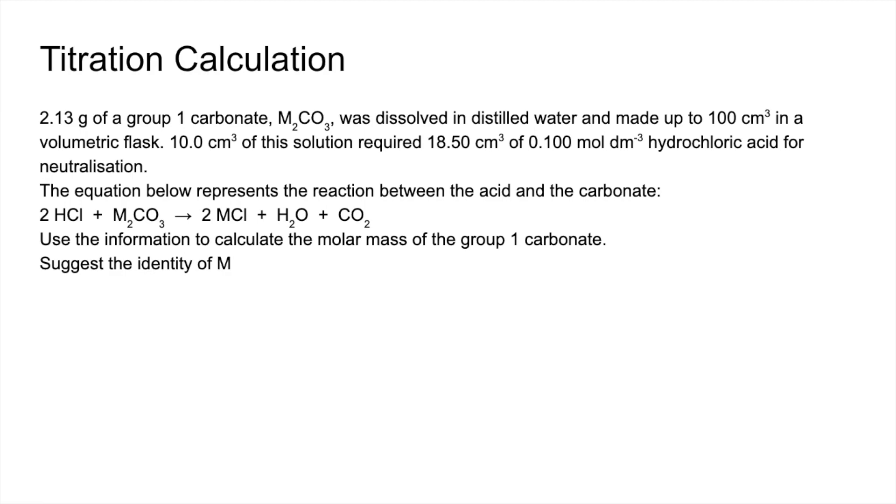Okay, what I always like to do is have a little diagram to sort of talk through what's going on in the question. So basically 2.13 grams of the carbonate is dissolved, it's put into a 100 ml volumetric flask, and then 10 cm³ of that's taken out and used in the titration.